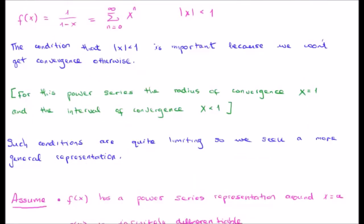Looking at the function 1 over 1 minus x, the condition that the magnitude of x must be less than 1 is important because otherwise we won't get convergence and it will not have a power series representation. So it only really works for small values of x.